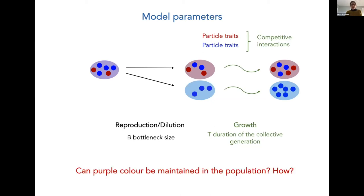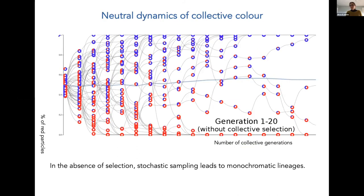Now that we have this process in place, we can ask: can the color purple be maintained in the population of collectives, and if it can, how? The first thing to think about is whether it just gets maintained by the stochasticity involved with dilution. You might think you can always maintain some purple-colored collectives, but this is not true. If you don't impose any selective pressure at the level of the collectives, sooner or later you will end up with monochromatic collectives — either red or blue, but not purple.